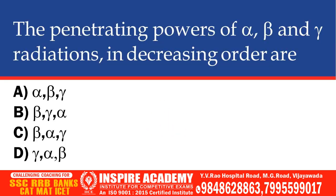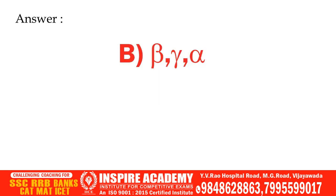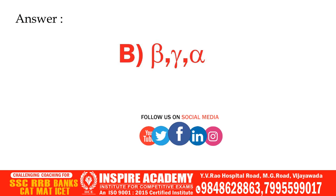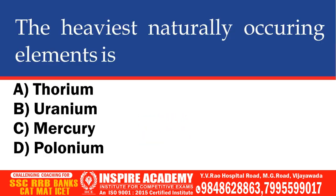The penetrating power of alpha, beta, and gamma radiations in decreasing order: options given include various orderings. And the correct answer is gamma, beta, alpha — i.e., gamma has the greatest penetrating power, followed by beta, then alpha.